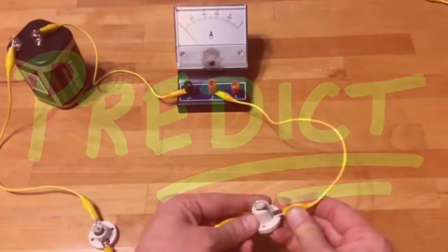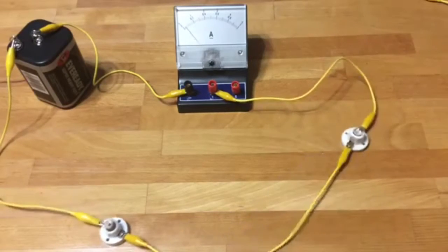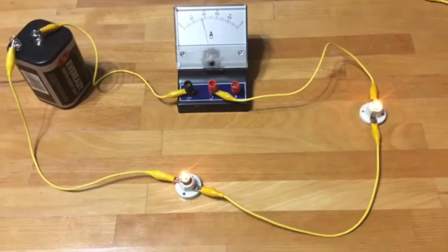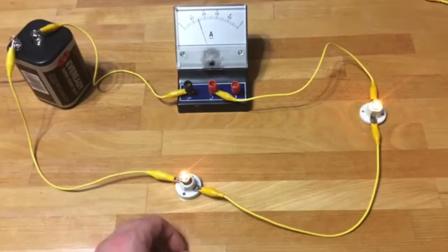The original value if you remember on that circuit was 0.4 amperes. Second bulb in series drops it to about 3 tenths of an ampere, a loss of 1 tenth.